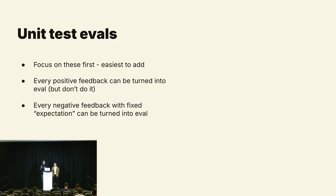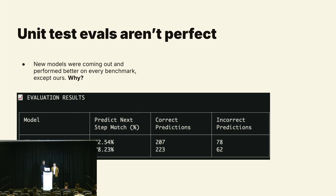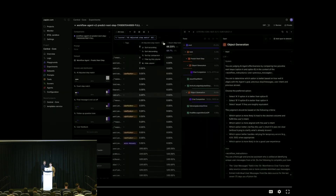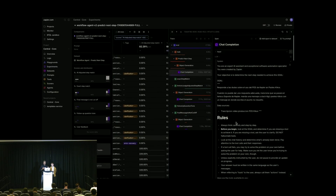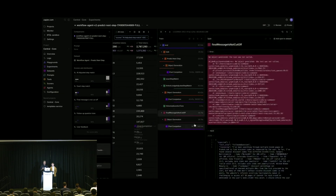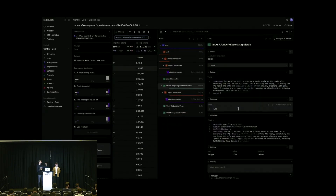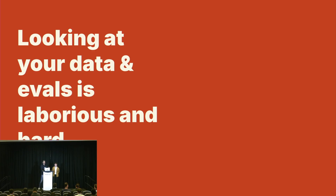Beware, though, of turning every positive feedback into an eval. Unit test evals are best for hill-climbing specific failure modes you spot in your data. We realized we had over-indexed on unit test evals when new, objectively stronger models were coming out but still performing worse in our internal benchmarks — which was weird. Because the majority of our evals were so fine-grained, it made it really hard to see the forest for the trees when benchmarking new models. There was always a lot of noise when comparing runs.